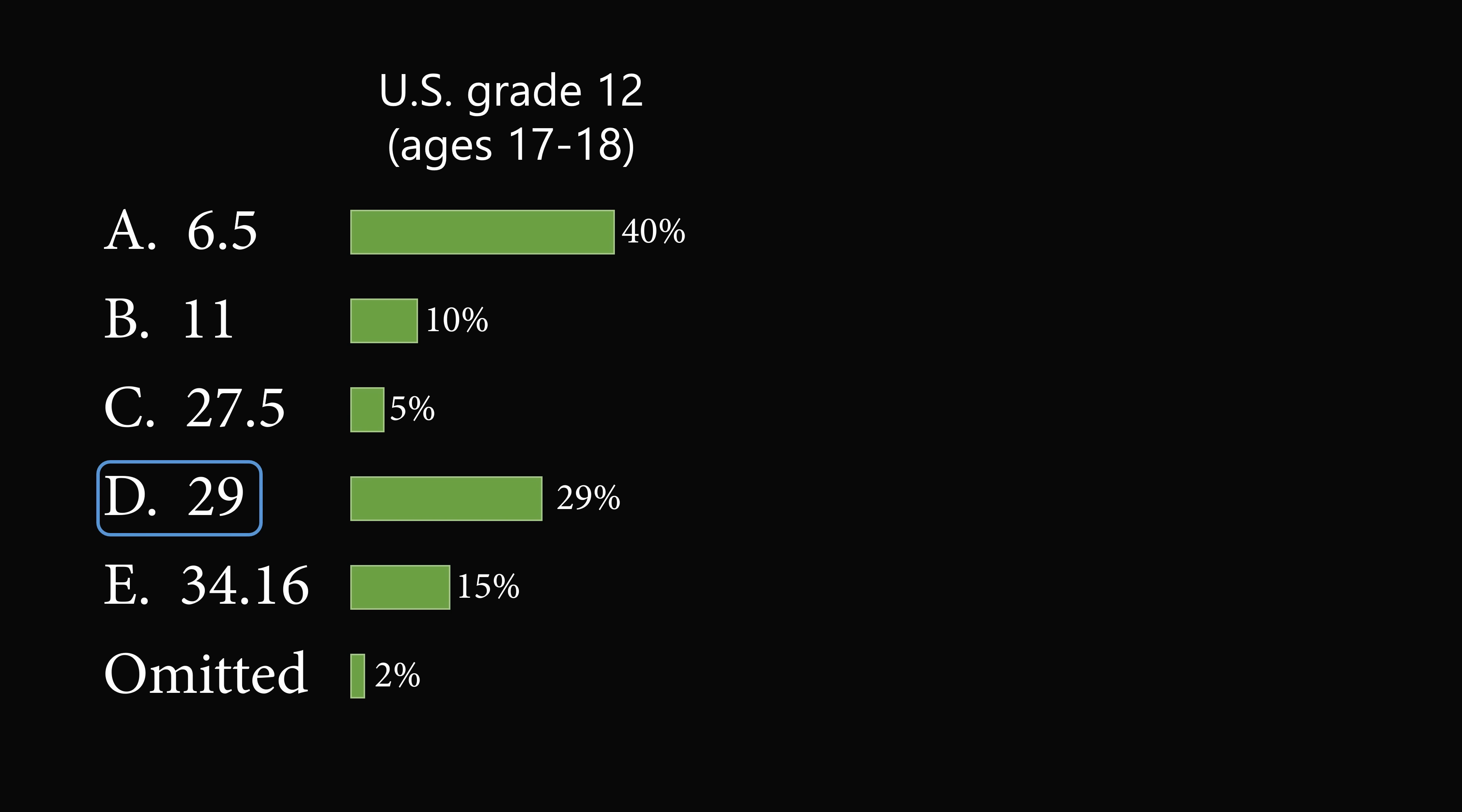So where did they go wrong? How did they get the wrong answer? Well, 29% were able to get the correct answer. But let's look at 6.5. They may have done the following. If they did the addition first, and then divided by 6, they would get the answer of 6.5. In other words, they took everything to the left of the division symbol as the numerator, and they took 6 as the denominator.